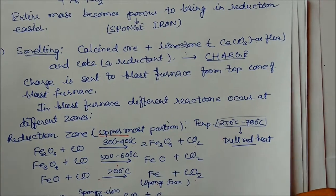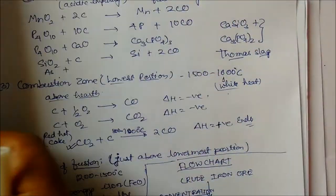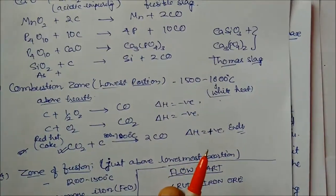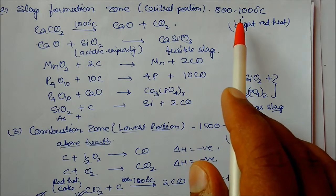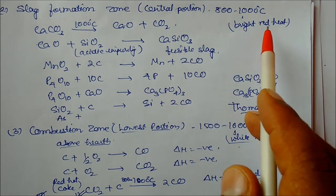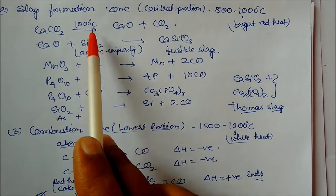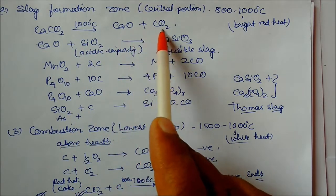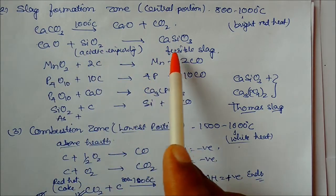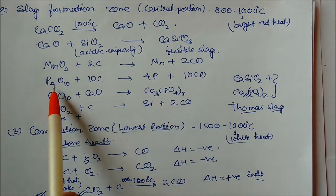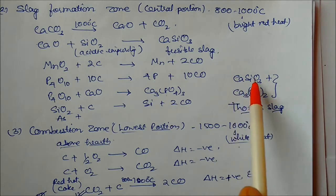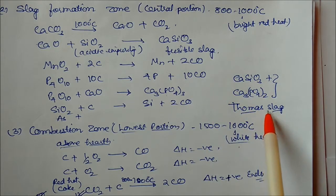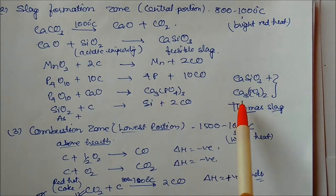The next zone is the slag formation zone — the central portion at 800 to 1000 degrees centigrade, bright red in color. Here, calcium carbonate at 1000 degrees centigrade decomposes to CaO plus CO2. SiO2 becomes a fusible slag. Manganese oxide, phosphorus oxide (P4O10), and CaO form calcium phosphate plus calcium silicate — both together called Thomas slag — used for fertilizers and road making.